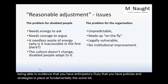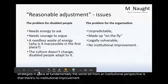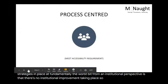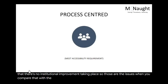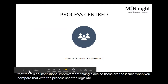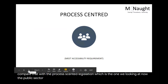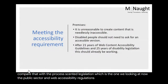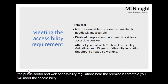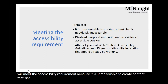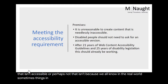The problem for the organisation is it's unpredictable. You do not know at what point a particular resource will be needed by a particular student with a particular disability. So it's completely unpredictable — you're making up responses on the fly. You are legally very vulnerable as a result of that. Even without the new legislation, you're vulnerable because you are not being able to evidence that you have anticipatory duty, that you have policies and strategies in place. And fundamentally, the worst bit from an institutional perspective is that there's no institutional improvement taking place. When you compare that with the process-centred legislation — the public sector web accessibility regulations — the premise is threefold.